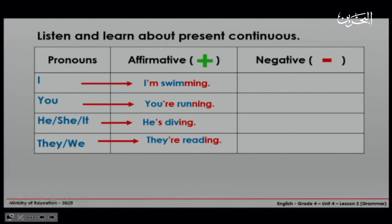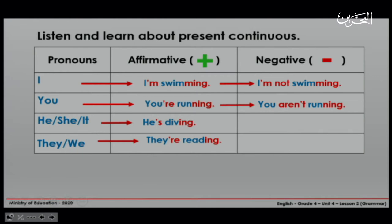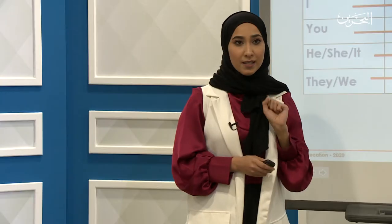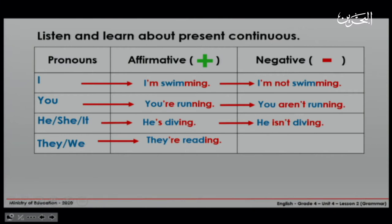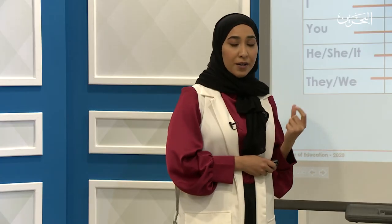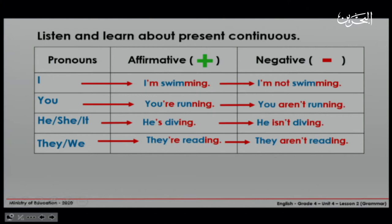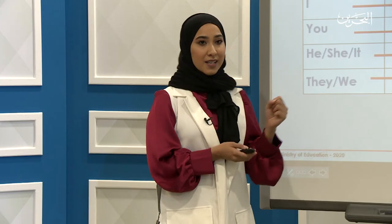Now, let's see the negative form. Here we have I — it will become: I'm not swimming. You — we will say: you aren't running. Or we can say: you are not running. He, she, and it take 'isn't' or 'is not': he isn't diving. They and we use 'aren't' or 'are not': they aren't reading.